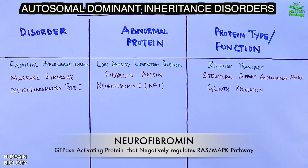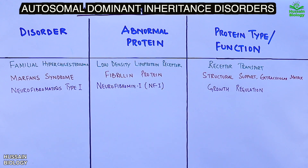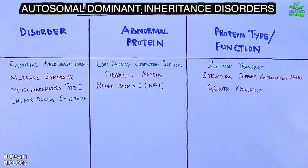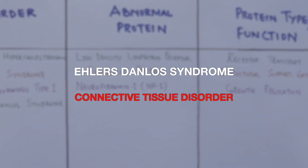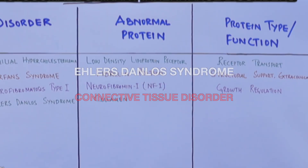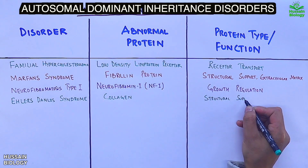Next we have Ehlers-Danlos syndrome, which is a type of connective tissue disorder. The abnormal protein here is collagen, whose normal function is structural support.